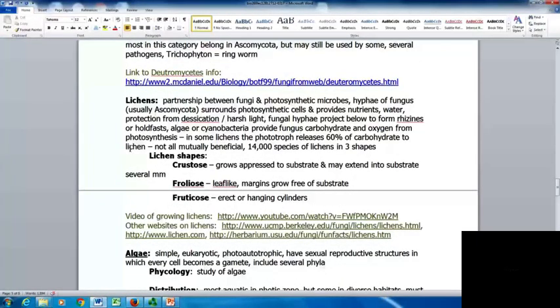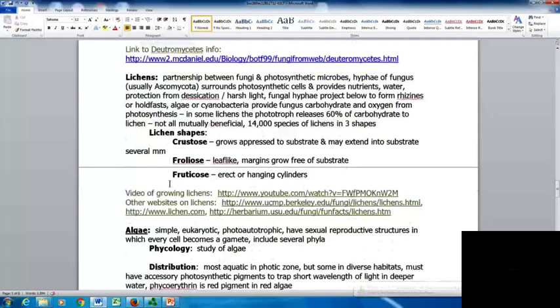Lichens are partnerships between fungi and photosynthetic microbes. The hyphae of the fungus, usually an Ascomycota, surrounds photosynthetic cells and provides nutrients, water, and protection from desiccation or harsh light. The fungal hyphae project below to form rhizines or holdfasts. The algae or cyanobacteria provide the fungus carbohydrate and oxygen from photosynthesis. In some lichens, the phototroph releases 60% of the carbohydrate to the lichen. Not all are mutually beneficial. There's about 14,000 species of lichens in three shapes: crustose grow oppressed to a substrate, foliose are more leaf-like with margins growing free, and fruticose grow erect or hanging cylinders elevated off the substrate.